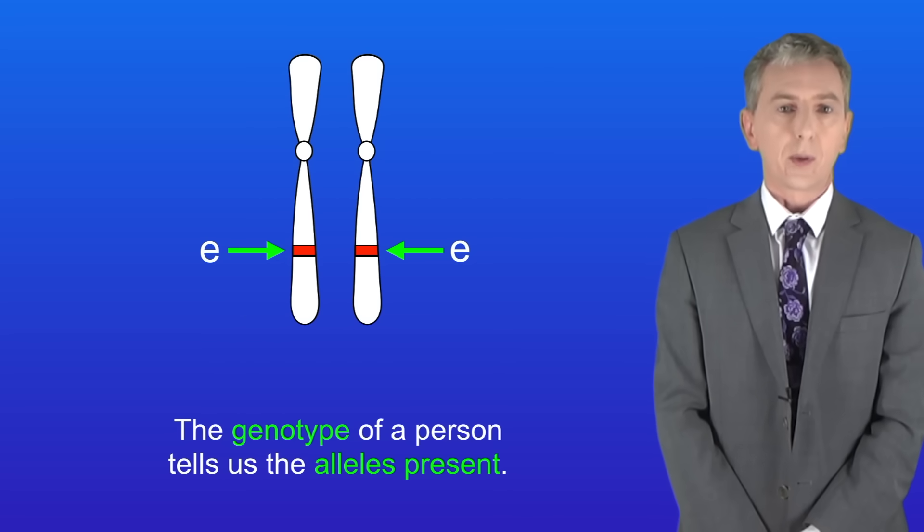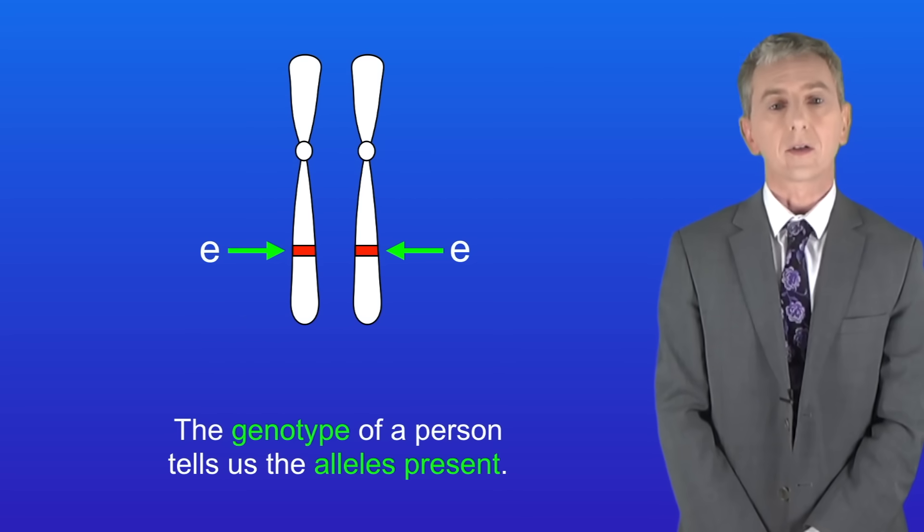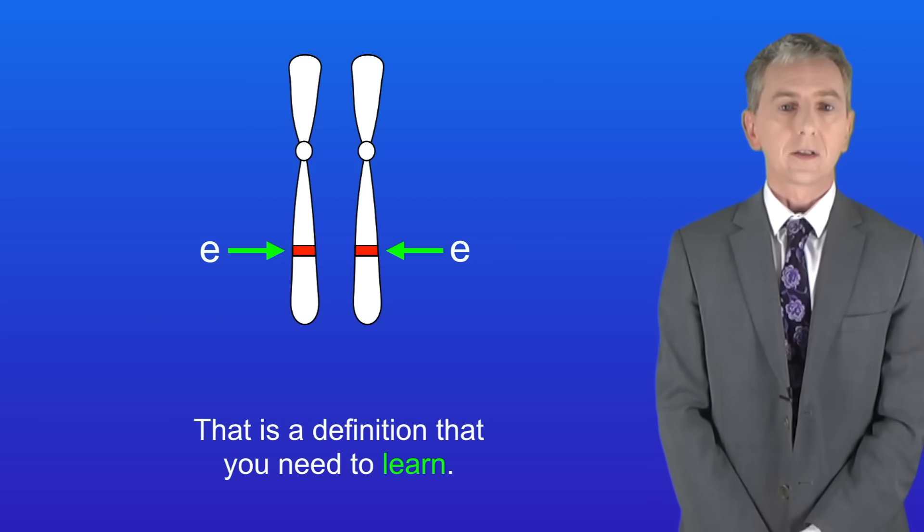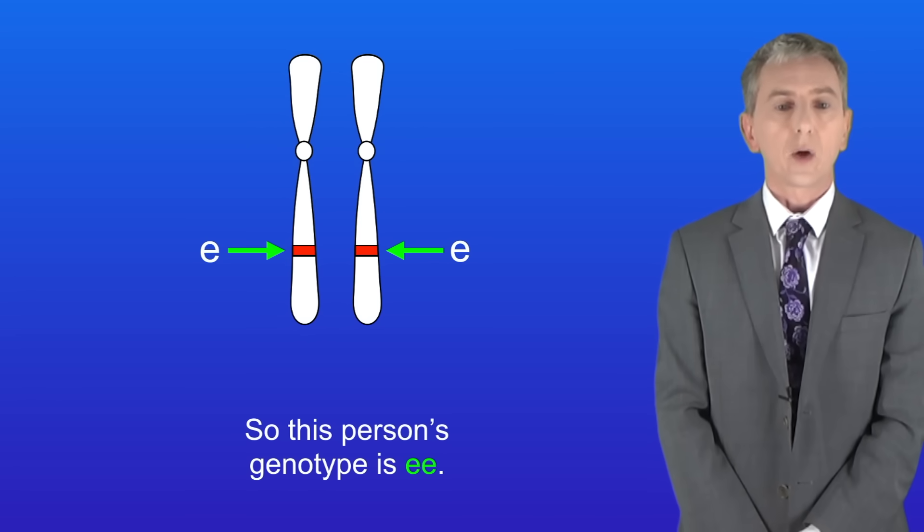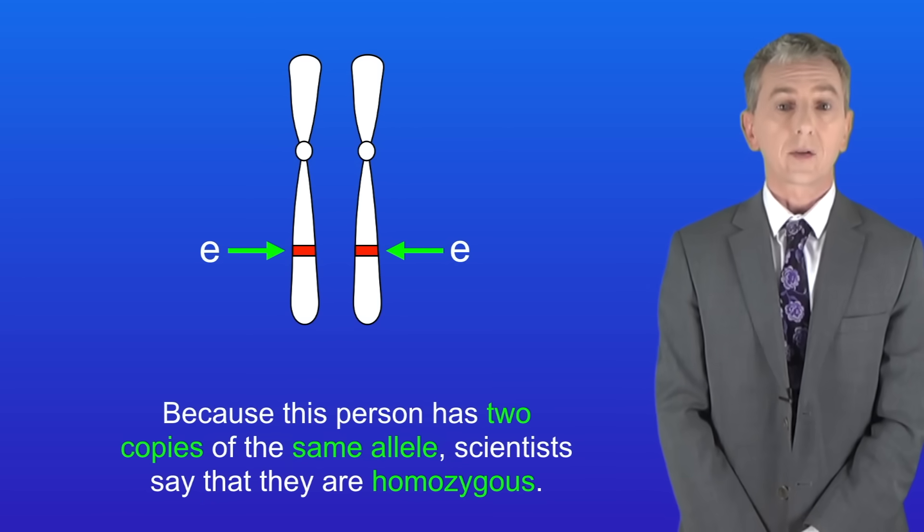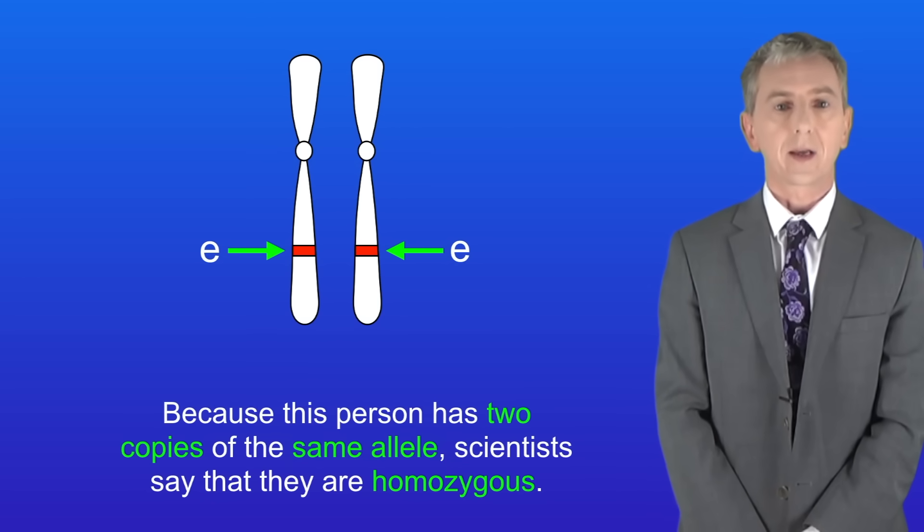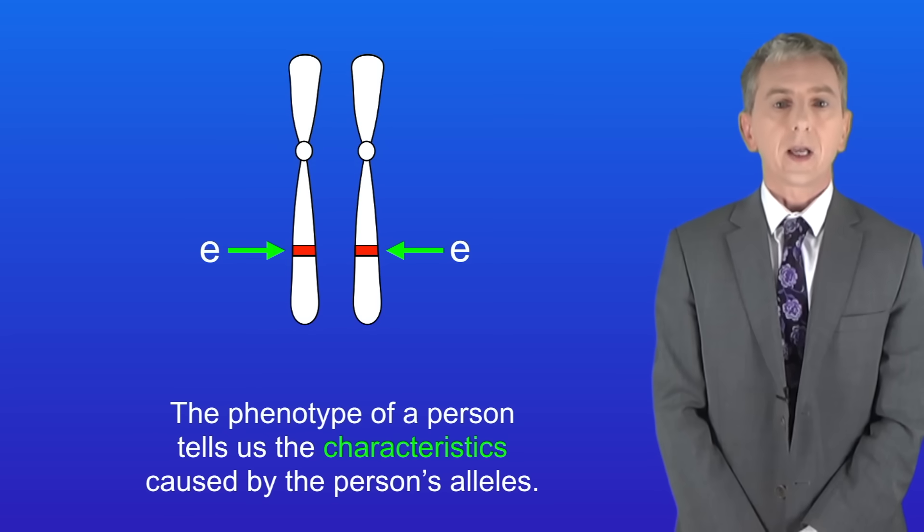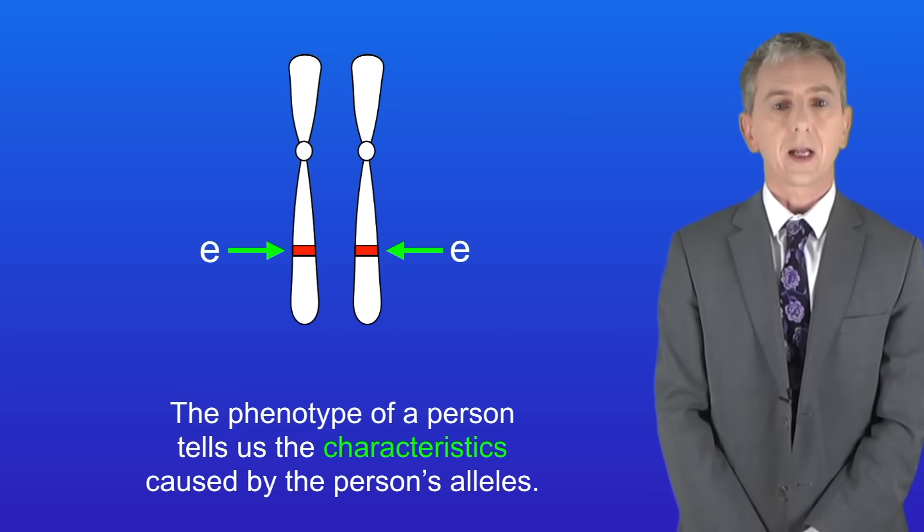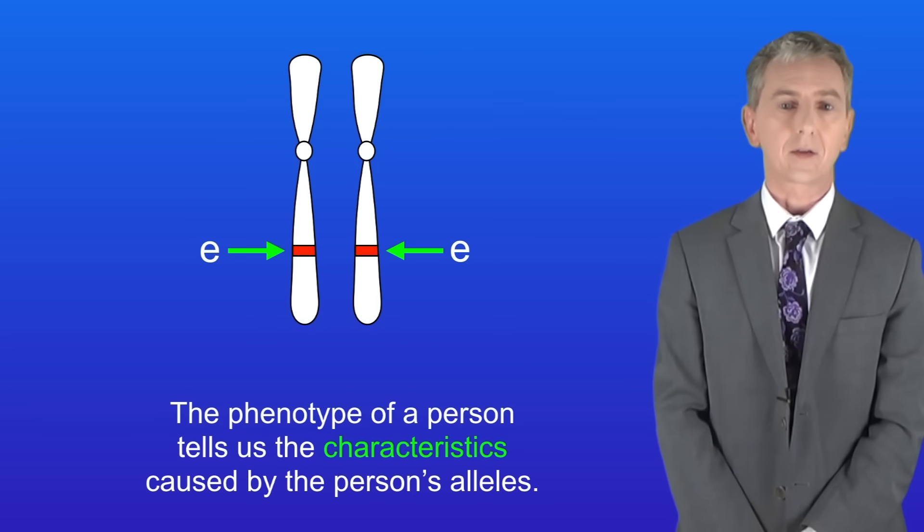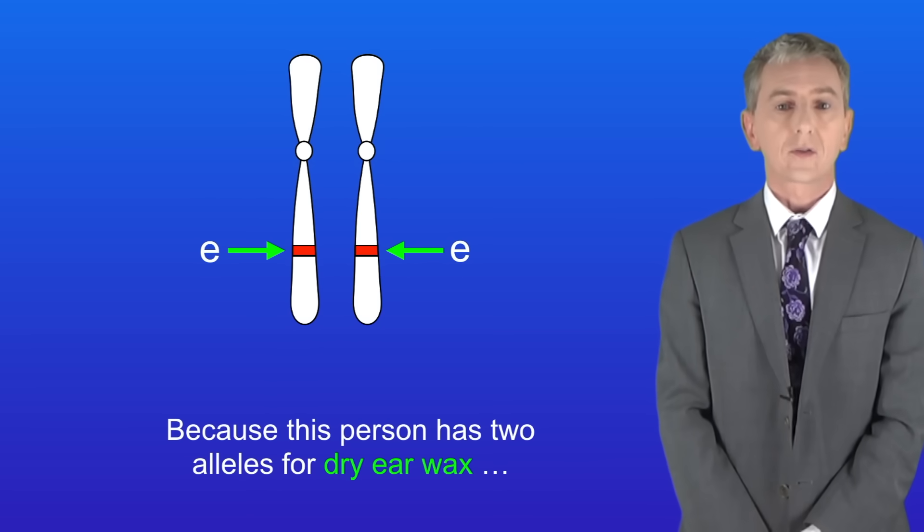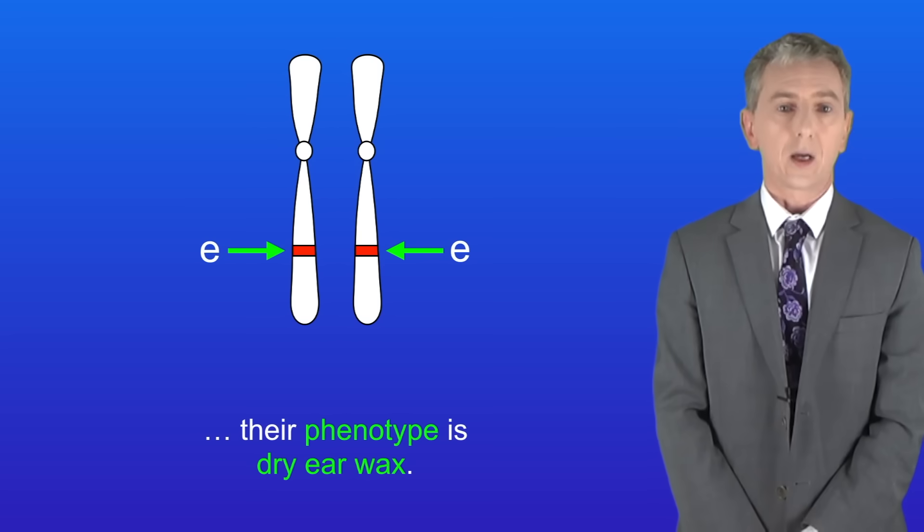The genotype of a person tells us the alleles present and again that's a definition you need to learn. So this person's genotype is lowercase e lowercase e. Because this person has two copies of the same allele, scientists say they are homozygous. Now the phenotype of a person tells us the characteristics caused by the person's alleles. So because this person has two alleles for dry earwax, their phenotype is dry earwax.